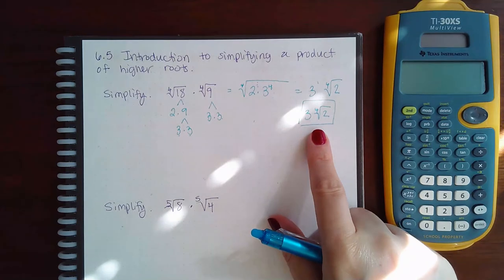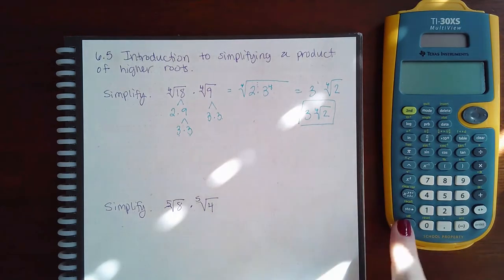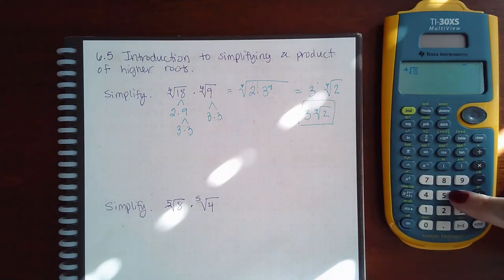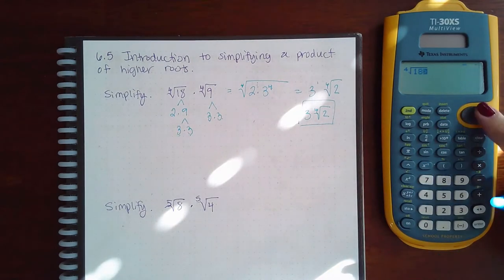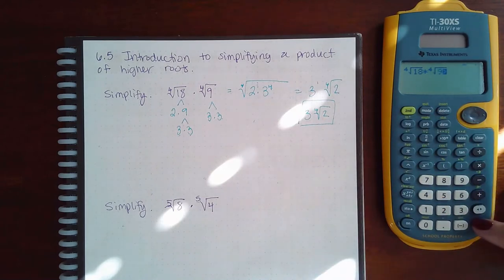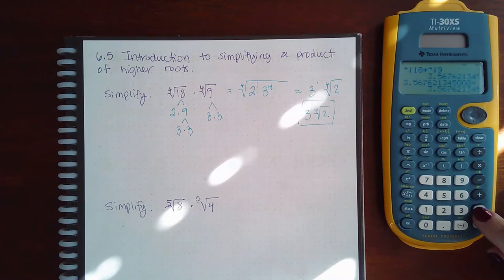For instance, if I go 4 root of 18 times 4 root of 9, it gives me a decimal, and no matter how many times I hit the double arrow, it still gives me a decimal.